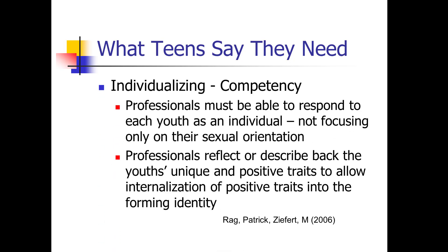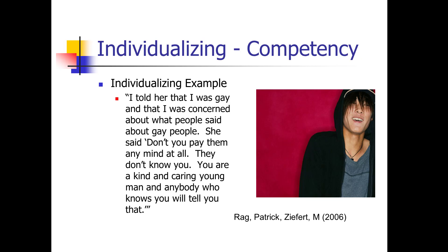Individualizing competency: professionals must be able to respond to each youth as an individual, not focusing only on their sexual orientation. Professionals reflect or describe back the youth's unique and positive traits to allow internalization of positive traits into the forming identity of the adolescent. An example from one teen: 'I told her that I was gay and that I was concerned about what people said about gay people. She said, don't you pay them any mind at all. They don't know you. You are a kind and caring young man, and anybody who knows you will tell you that.'